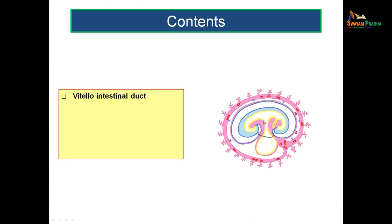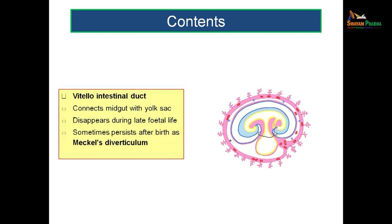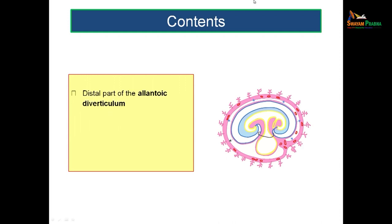The vitello-intestinal duct connects the midgut with the yolk sac; during late fetal period it degenerates. If it persists after birth, that condition is known as Meckel's diverticulum. The allantoic diverticulum vascularizes the umbilical cord — the umbilical vessels are derived from it. Its remnant is seen as the urachus in late fetal period, which after birth forms the median umbilical ligament, extending from the apex of the urinary bladder to the anterior abdominal wall.